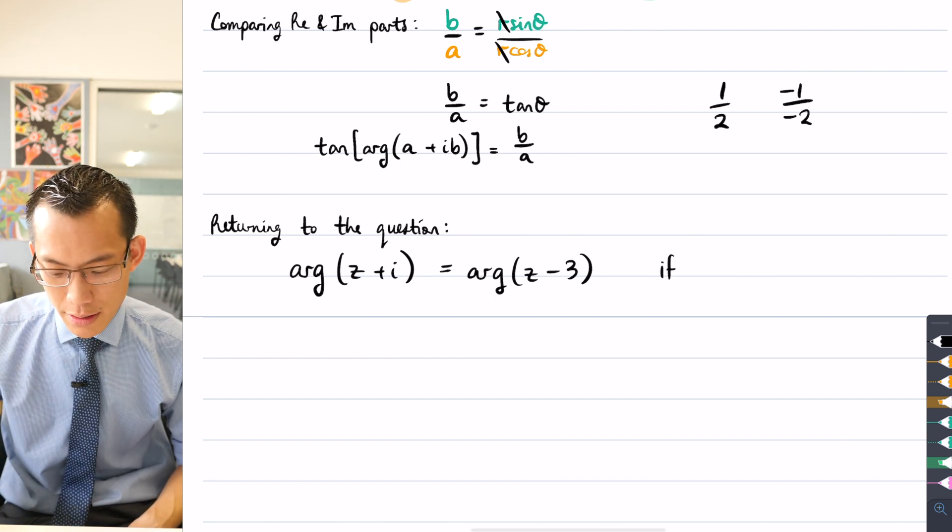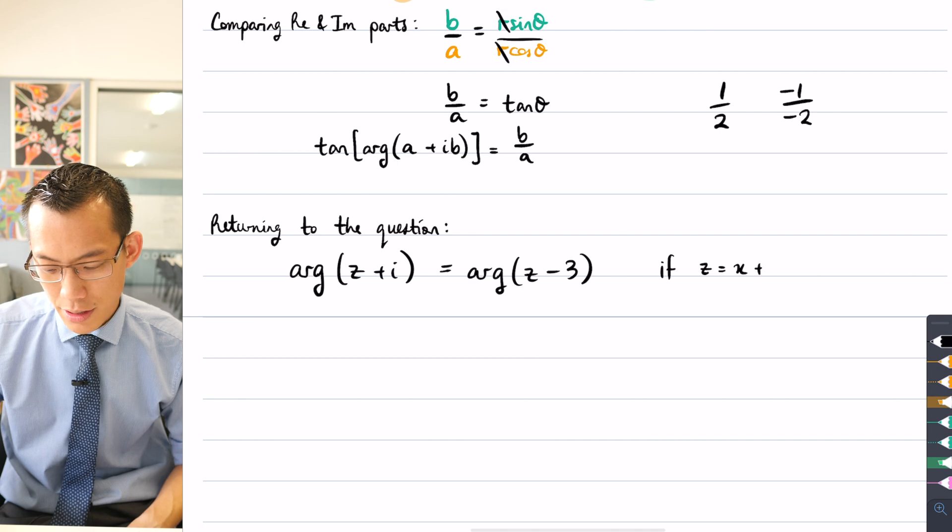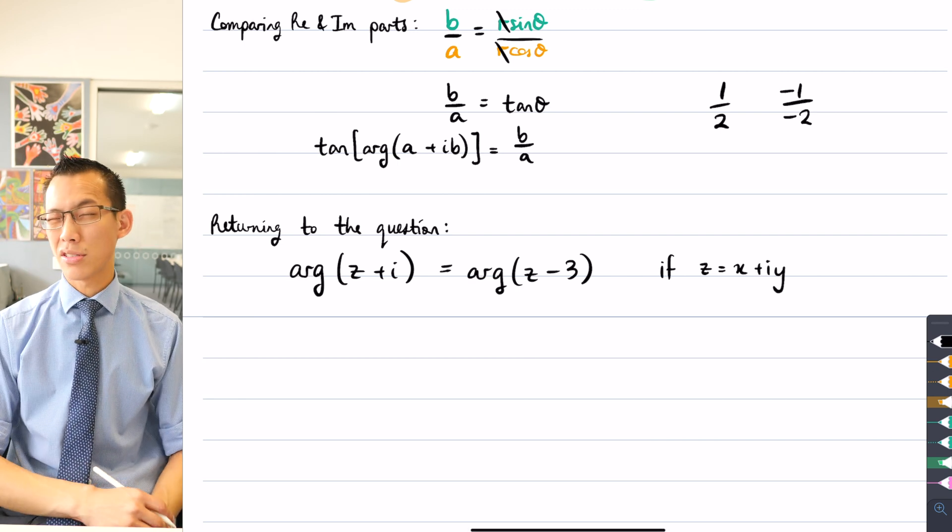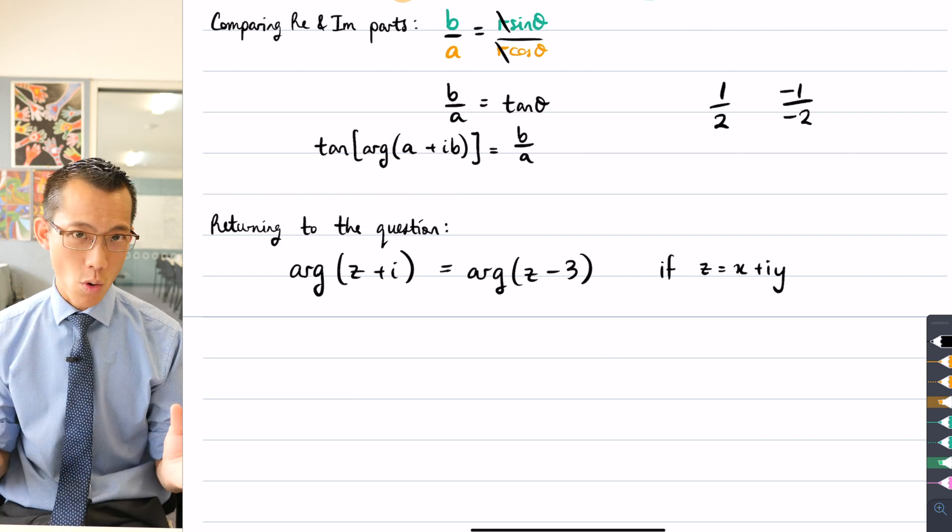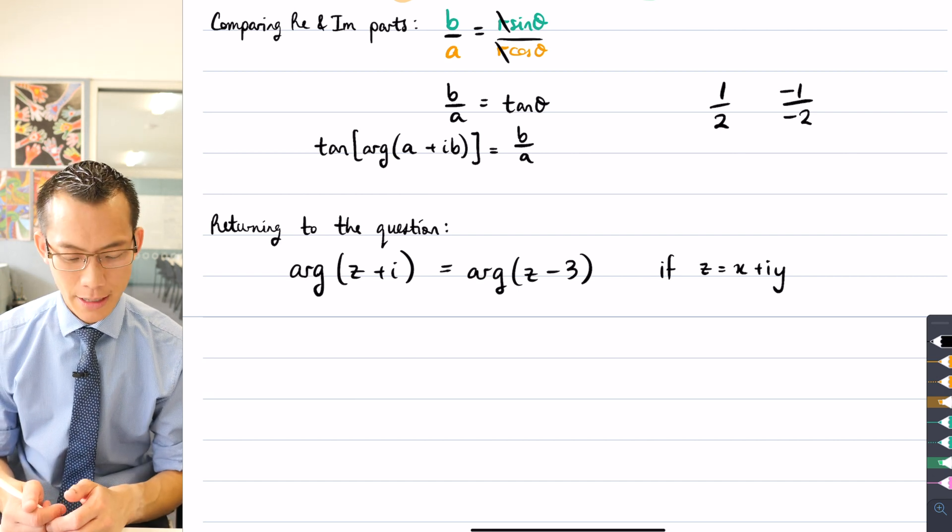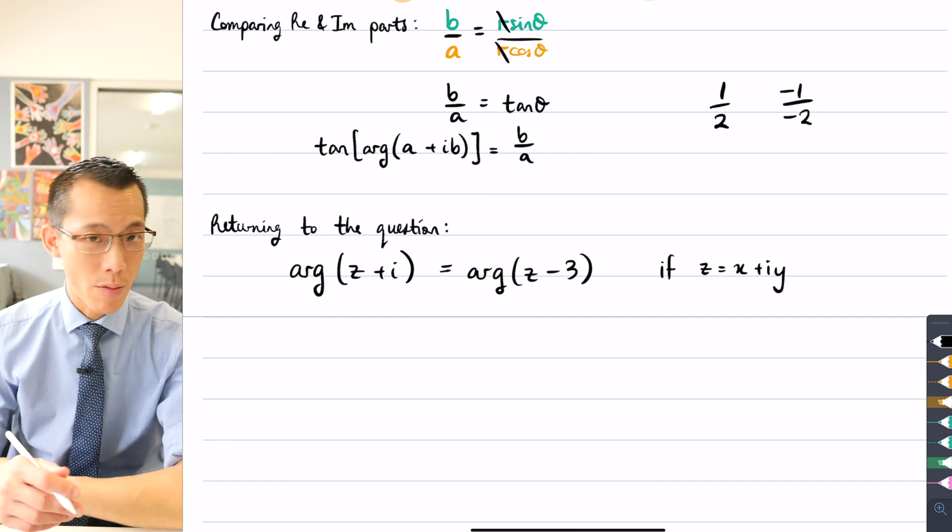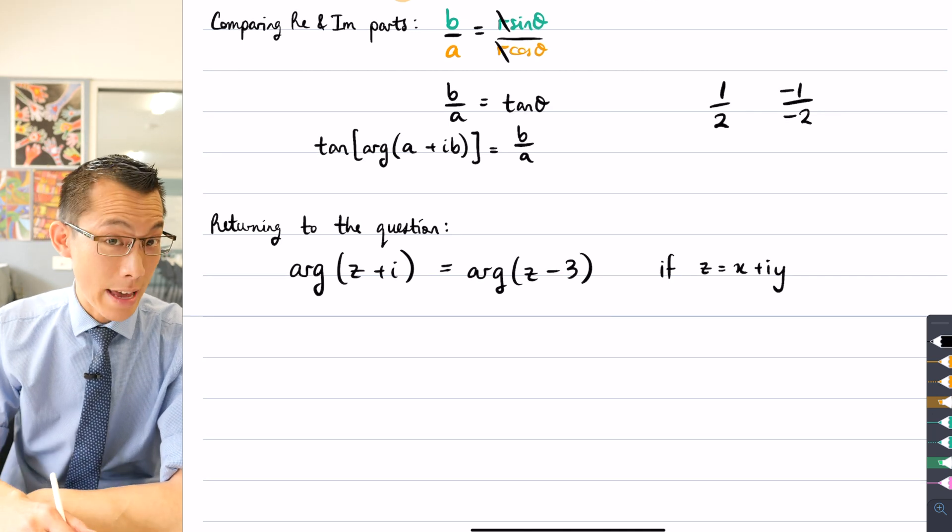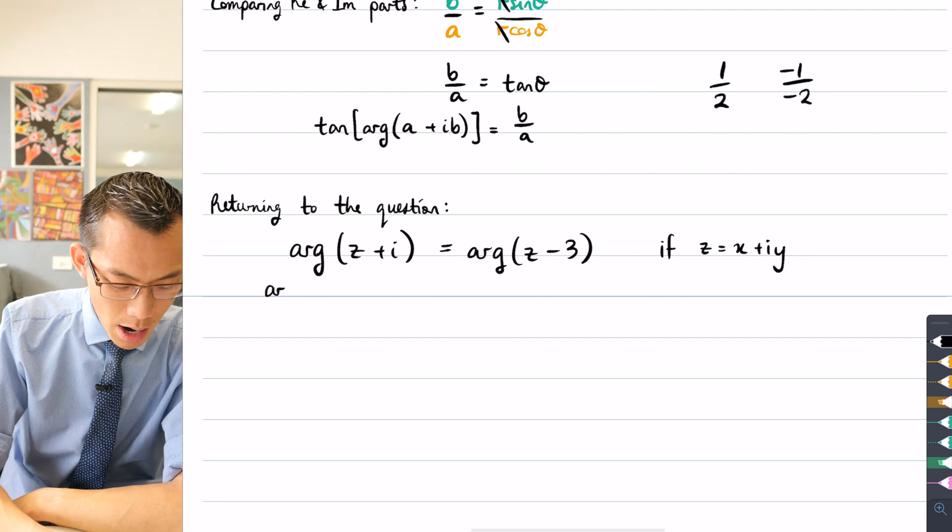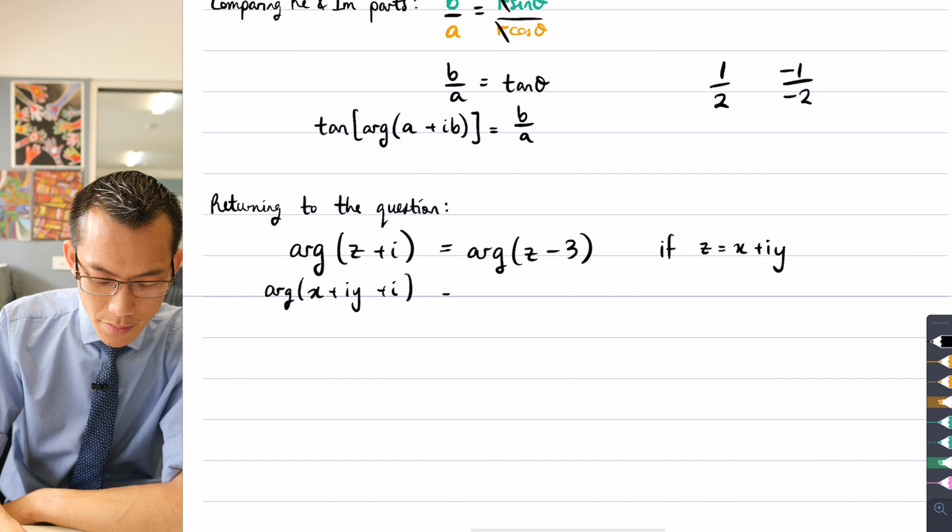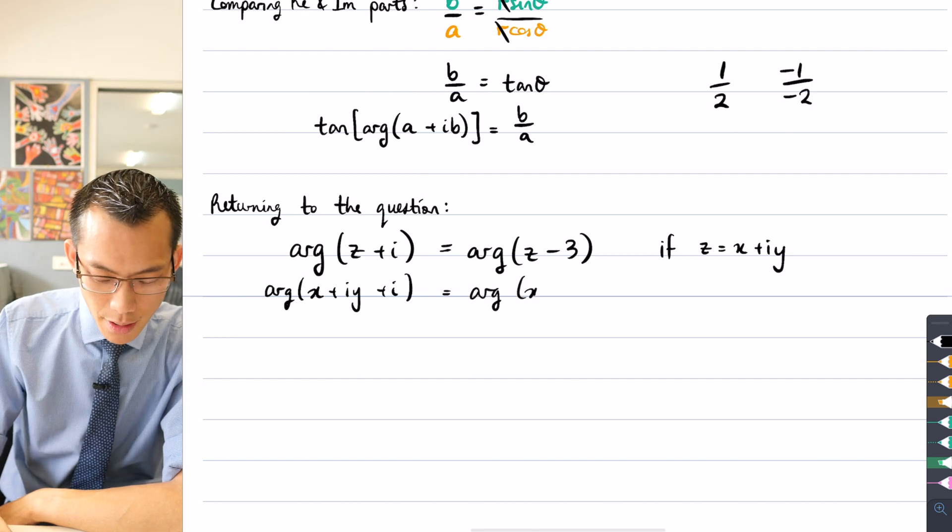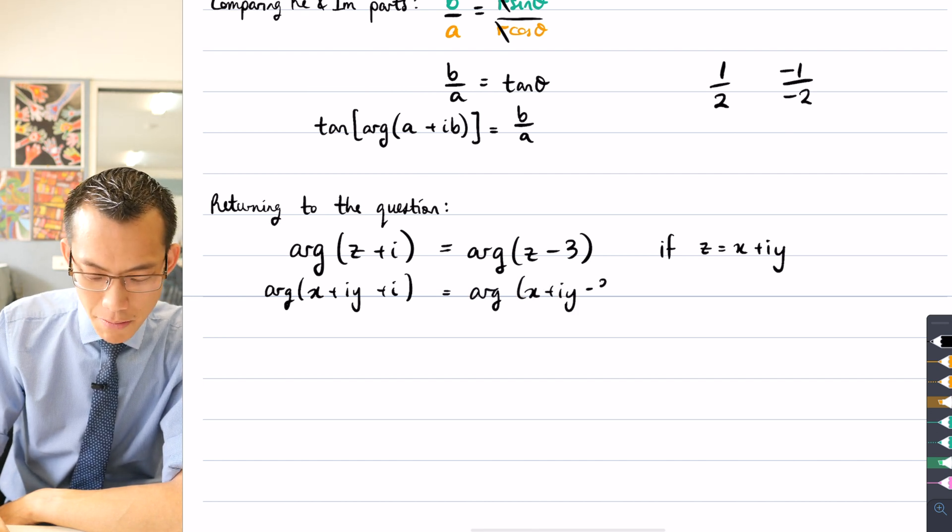So here's what I'm going to do. I'm going to say, if z is equal to, I'm going to write this as not a plus ib, but x plus iy, because I want to end up with an equation that relates x's and y's together. That'll mean by Cartesian equation. If z equals x plus iy, I can just do a substitution. Everywhere I saw z, I'm going to write x plus iy. So that gives me arg of x plus iy plus i equals arg of x plus iy minus 3.